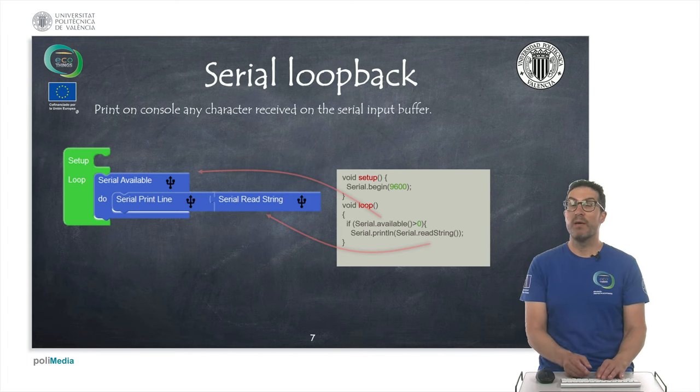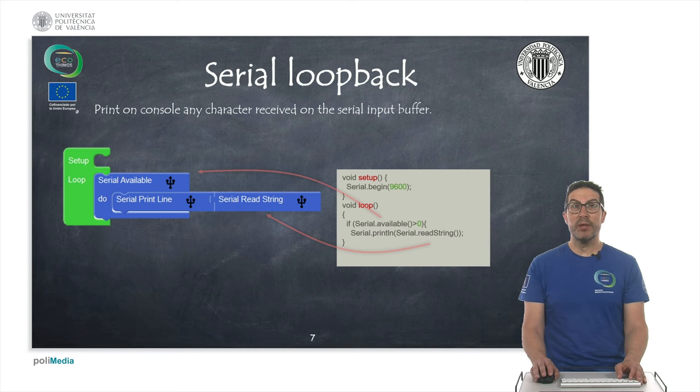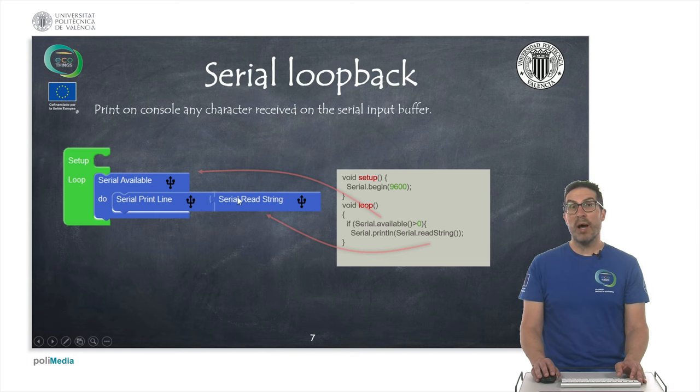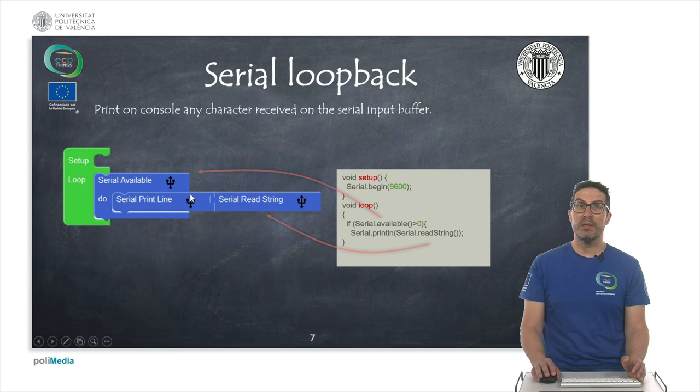Anything we type and we send from our PC will be then displayed on the serial console. For that, we use the serial available instruction. Any time we receive something, this instruction will execute the instructions that we put here inside. In particular, once we are sure that we have something in the buffer, in the read buffer or the input buffer, then we read the string, whatever it is, and then we print it back as a new line.